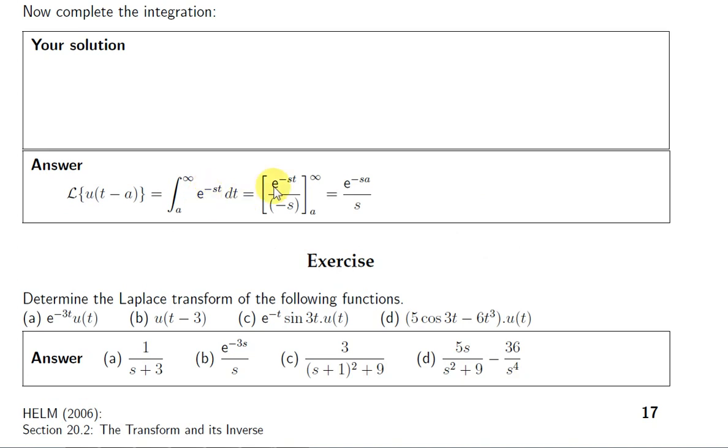And that's a straightforward integral. It's just e to the power of a constant times t. So we treat minus s as the constant. The upper limit is infinity. If we let t go to infinity, e^(-st) will go to 0 because we're assuming that s is a positive number. So minus s, the power, is negative, so that will go to 0.